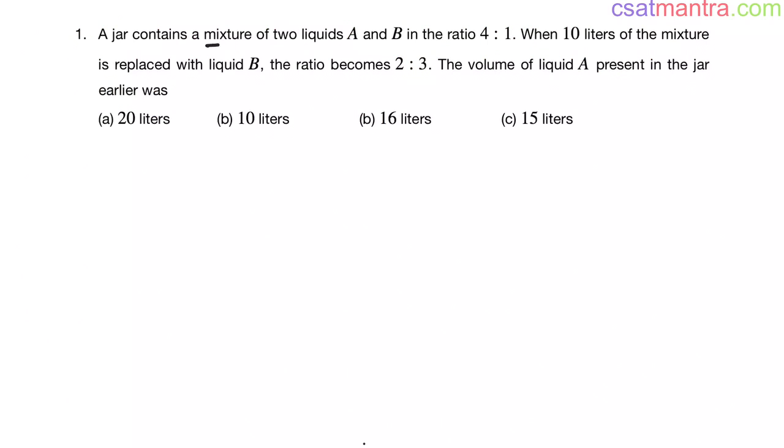A jar contains a mixture of two liquids A and B in the ratio of 4 is to 1. When 10 liters of the mixture is replaced with liquid B, the ratio becomes 2 is to 3. The volume of liquid A present in the jar earlier was.